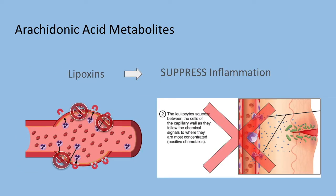Lipoxins are also generated from arachidonic acid metabolites by the same pathway that makes prostaglandins and leukotrienes, but unlike those two which enhance inflammation, lipoxins actually suppress inflammation by inhibiting the recruitment of leukocytes — specifically inhibiting neutrophil adhesion to the endothelium and chemotaxis. Also to note, drugs designed to counteract prostaglandins and leukotrienes often inhibit the enzymes that produce those substances, or they block the receptors that leukotrienes and prostaglandins act on.